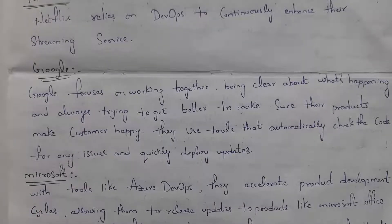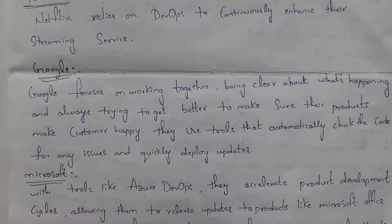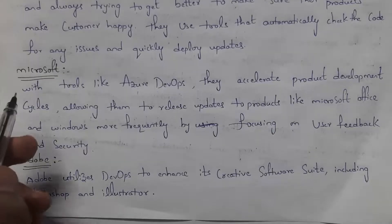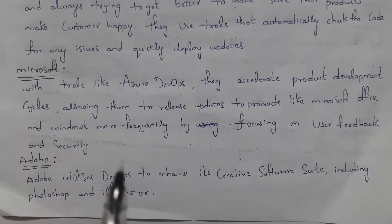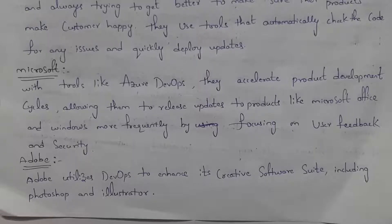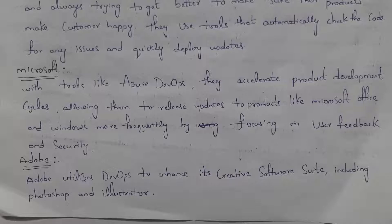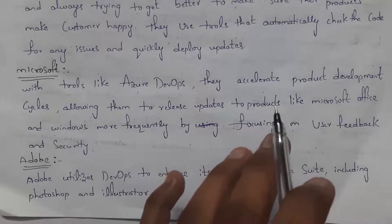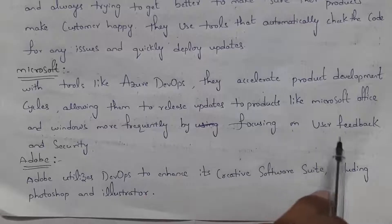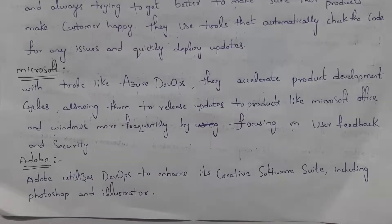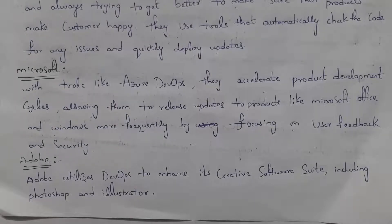Google focuses on collaboration and uses various automation tools to check errors in code and quickly deploy updates. Microsoft also uses DevOps tools to frequently update products like MS Office and Windows, focusing on user feedback as well as security. Adobe uses DevOps when creating creative software products like Photoshop and Illustrator.